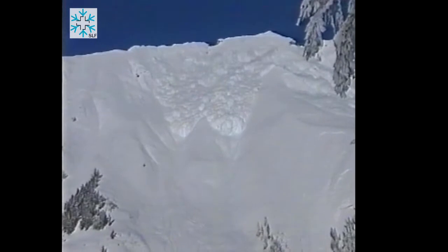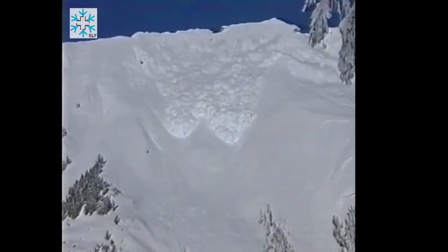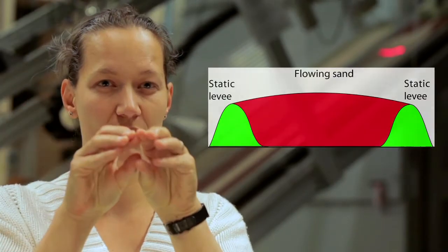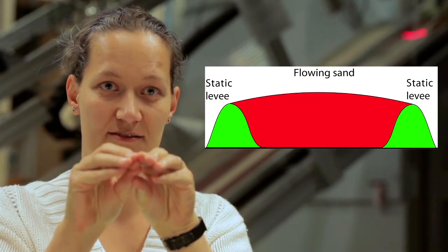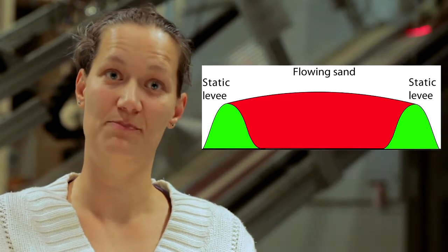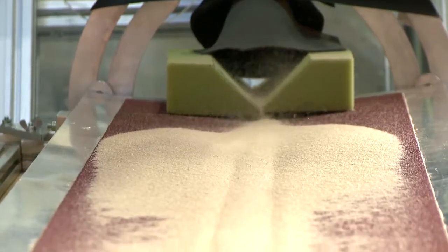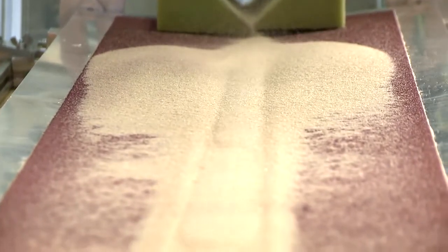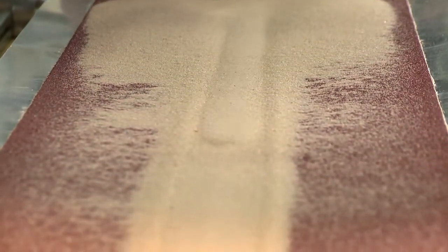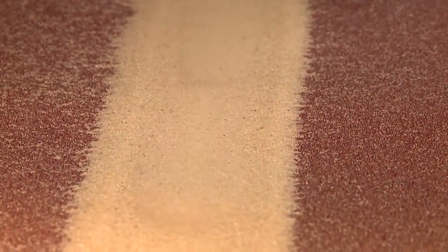As the snow moves down the mountain it carves channels, forming static levees on the side and a flowing region of snow in the middle. This is the exact same principle that we find in the laboratory as well. What you can see in this experiment is that the sand flowing down the slope has formed mounds either side of the flow that are helping to channel the other sand. This helps to reduce the friction of the flow because the mounds constrain how far out the sand is spreading.